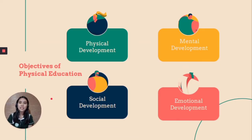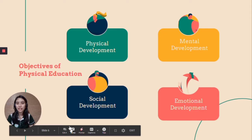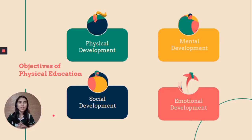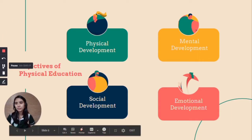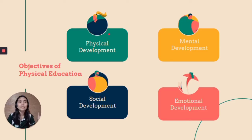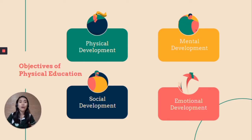The objectives of physical education promote holistic development. The first objective is physical development, which is very self-explanatory — it relates to physical fitness. Physical fitness is the capacity of the body to engage in work and play without undue fatigue. One of the goals of physical education is to promote and develop your physical aspect, meaning your physical fitness.